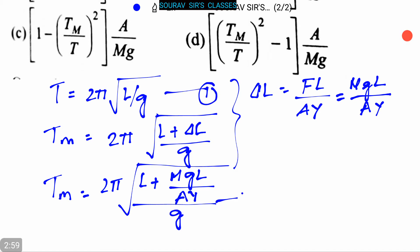Now solving the equations, we can get that 1 by Y is equal to A by MG into TM by T whole square minus 1.